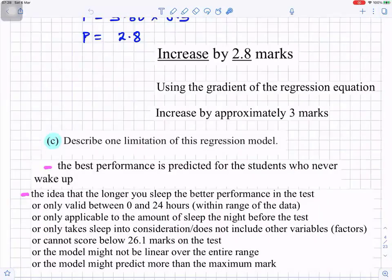Question 1c: Describe one limitation of this regression model. What it means is that the best performance is predicted for the students who never wake up. That means if you keep sleeping your results will keep going up, but that means you won't even do the test. The idea that the longer you sleep, the better the performance in the test, is only valid between zero and 24 hours within range of the data. These are different reasons you can give, like the model might not be linear over the entire range, and you cannot score below 26.1 marks on the test.